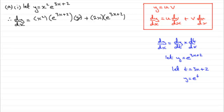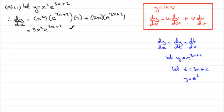We've got two terms here and I just want to clean each of those up. The first term would look better as 3x squared times e to the 3x plus 2. And as for the second term, I could just remove the brackets and get plus 2x e to the 3x plus 2. And that's essentially it.